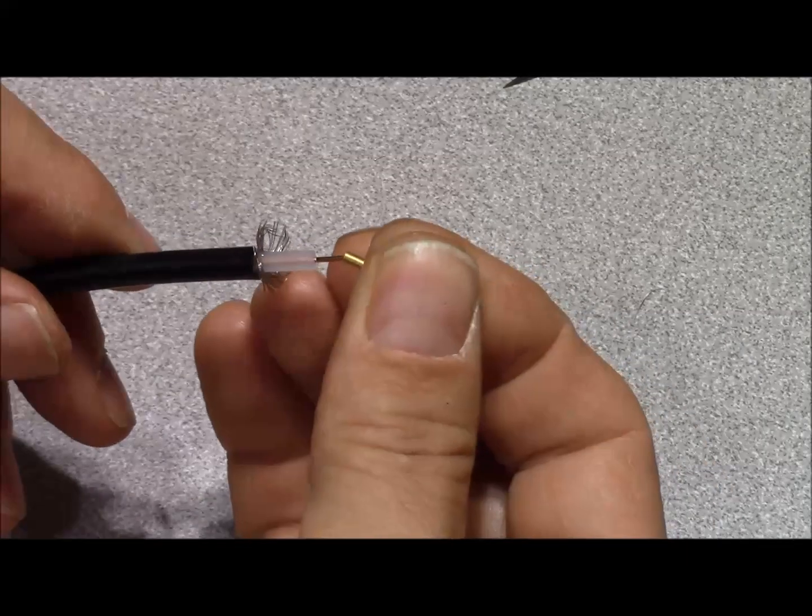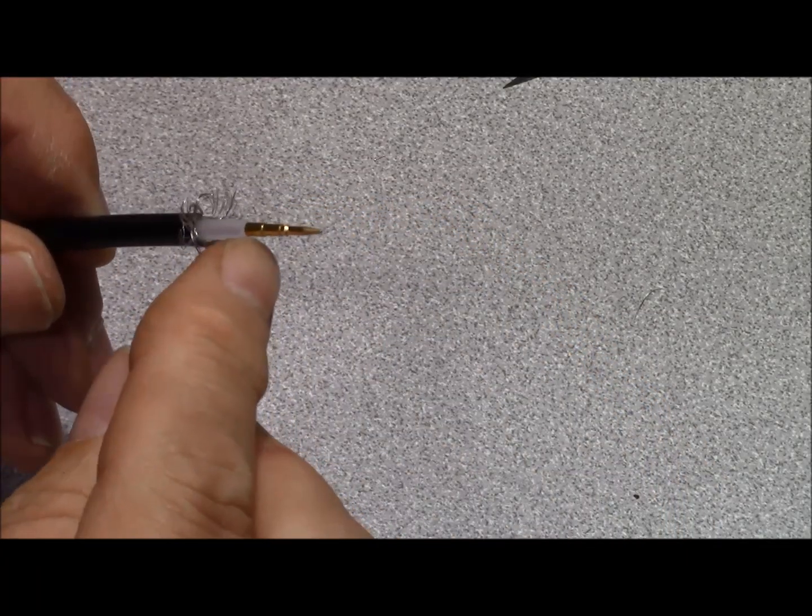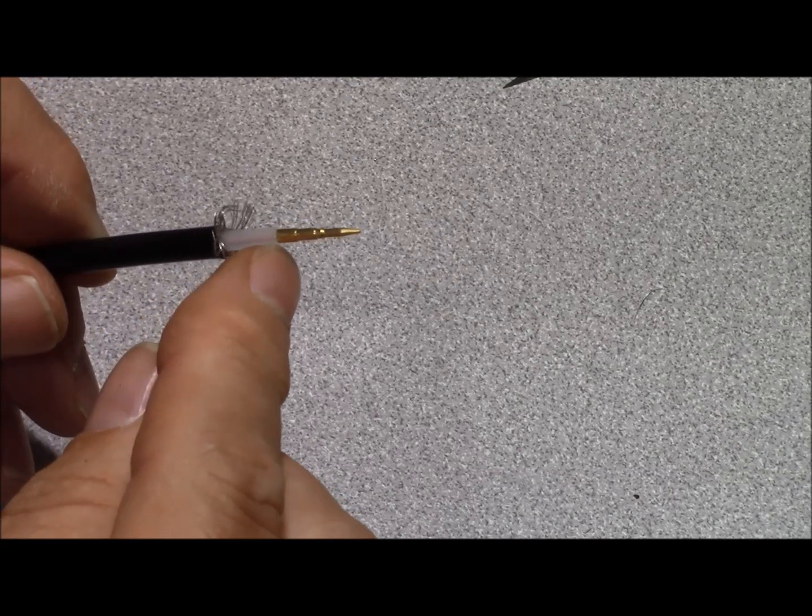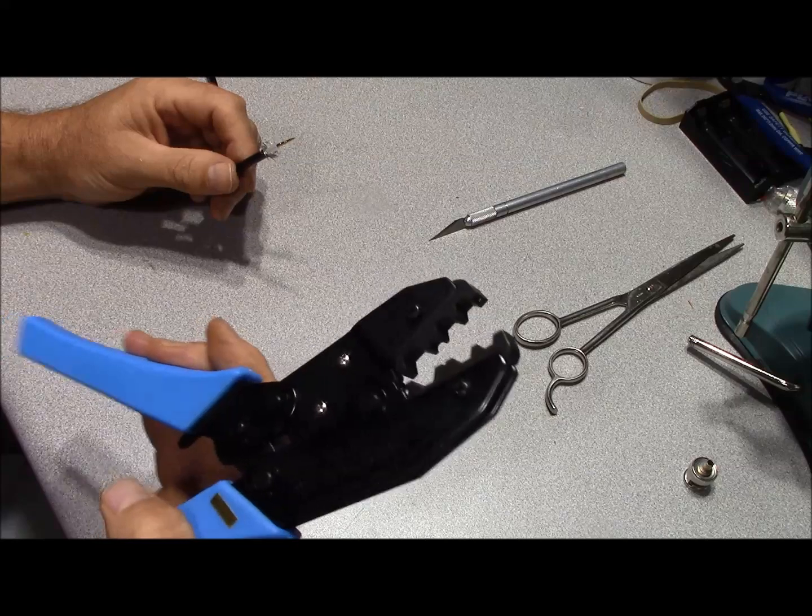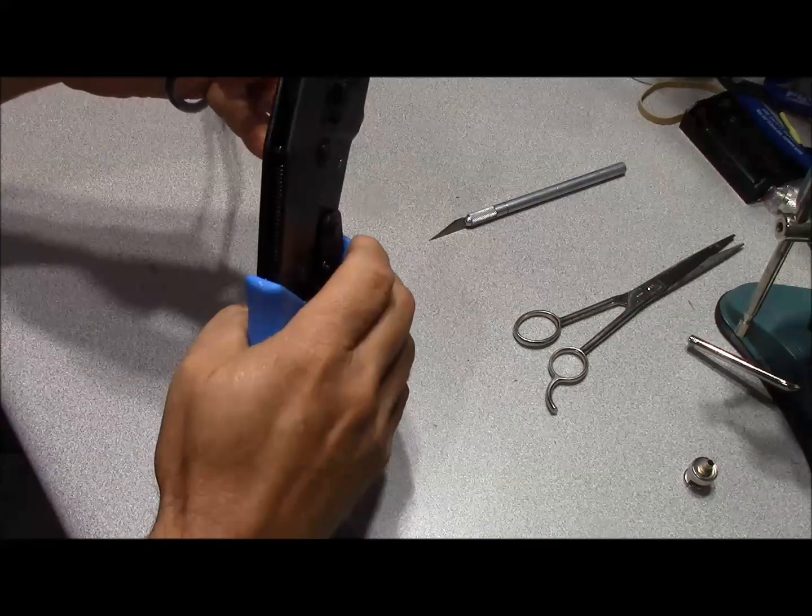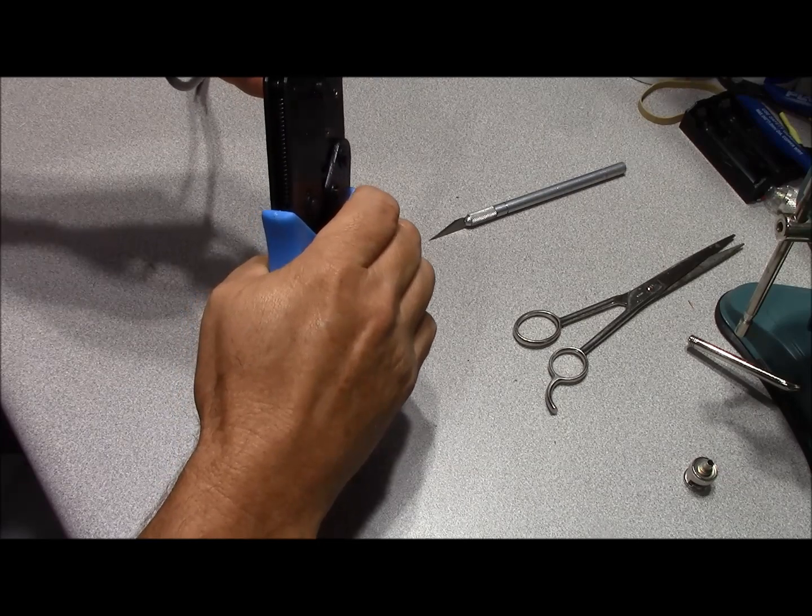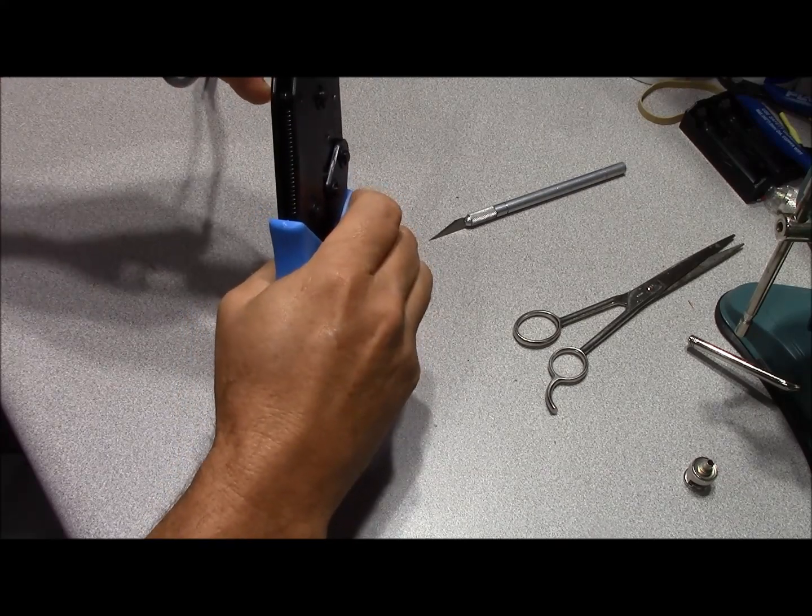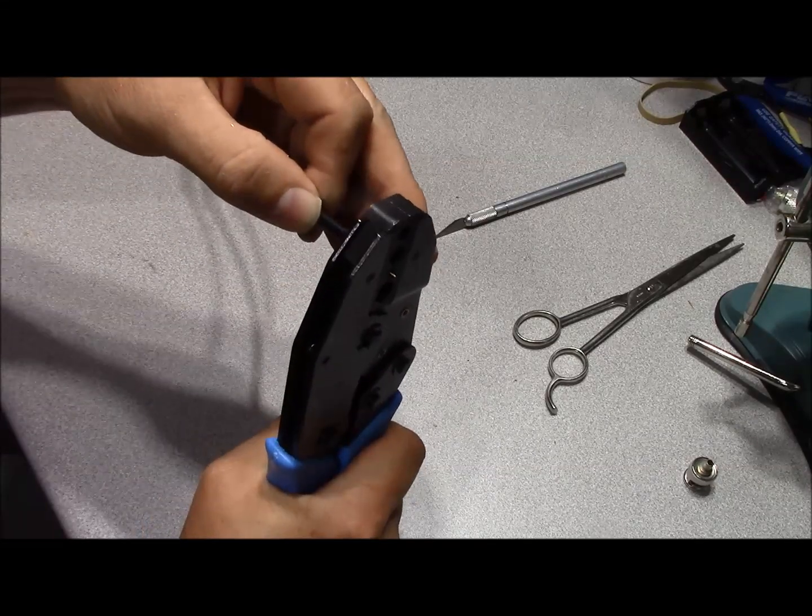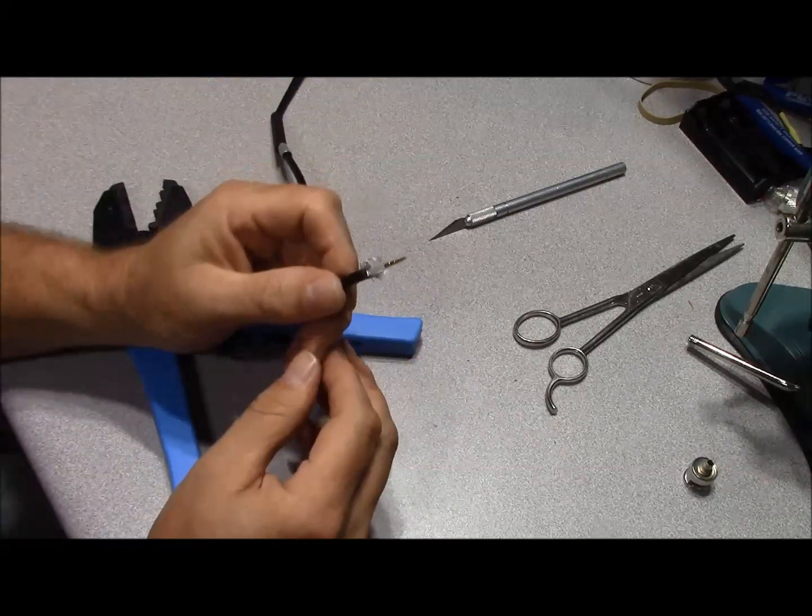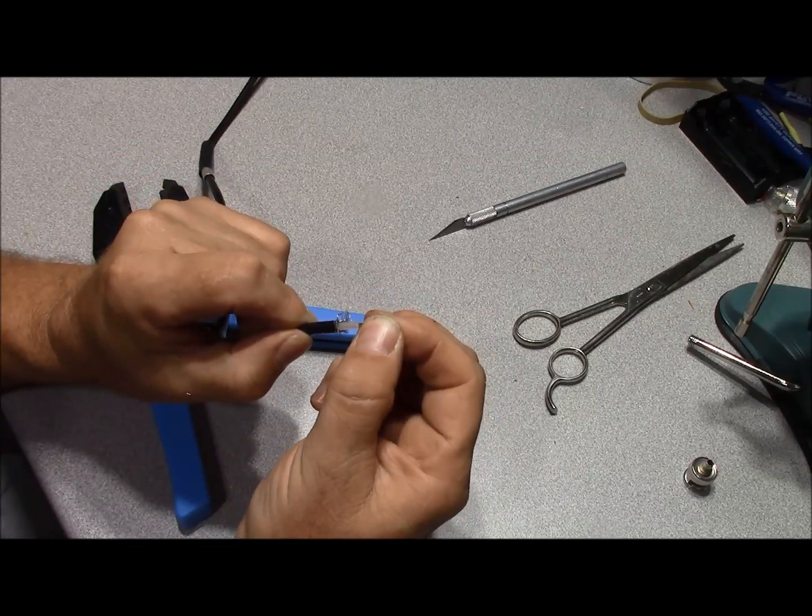Take your center pin, slide it over your center conductor, and the base of the center pin should rest up against the dielectric. Now take your crimping tool and your .068, bring it all the way down and make your crimp. Just like that. Then check your work.